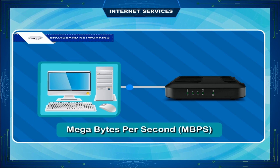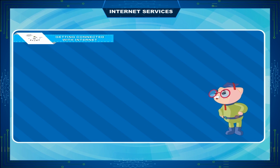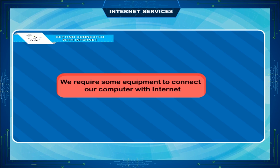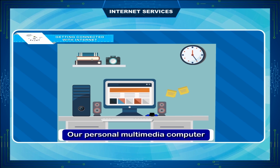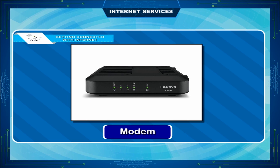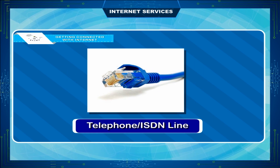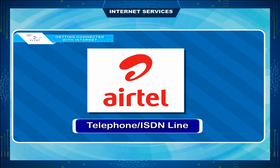Broadband networking: a broadband connection is a high-speed connection with very good speed of connectivity and data transfer, measured in megabytes per second (MBPS). To connect our computer with the internet, we require some equipment: a personal multimedia computer, a browser such as Internet Explorer, Chrome, or Mozilla, and a telephone or ISDN line from providers such as BSNL, MTNL, or Airtel.